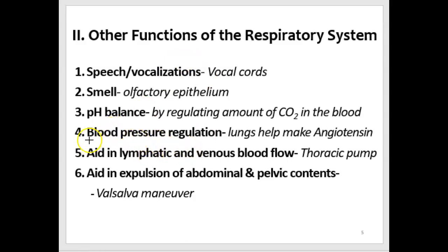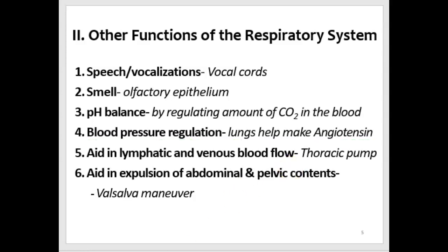When we did the circulatory system, we talked about blood pressure regulation. The lungs were involved with the production of angiotensin, which is a strong vasoconstrictor that also indirectly increases blood volume, raising blood pressure. So the lungs do contribute to blood pressure. The respiratory system also functions by expanding the thoracic or abdominal cavity to aid the flow of fluids in the lymphatic vessels and blood in the venous system — we refer to this as the thoracic pump.